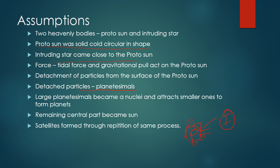Large planetesimals became nuclei of planets, attracting other dust particles that were detached from the proto-sun. The remaining central part became the Sun.